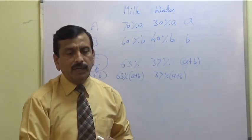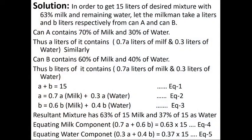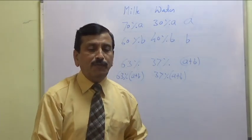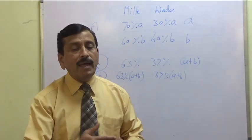From the solution: A plus B equals 15 is equation 1. The total mixture C is 15 liters. Equation 2 comes from equating the milk content: 0.7A plus 0.6B. The resultant mixture has 63% milk, so 63% of 15 liters gives equation 4, and the water content gives equation 5.